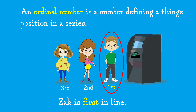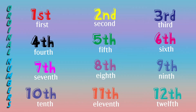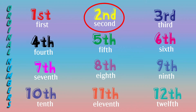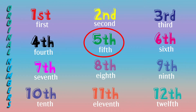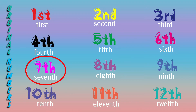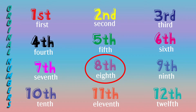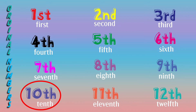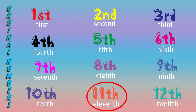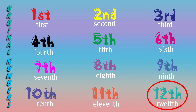Zach is first in line. Ordinal numbers: first, second, third, fourth, fifth, sixth, seventh, eighth, ninth, tenth, eleventh, twelfth.